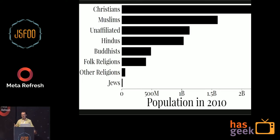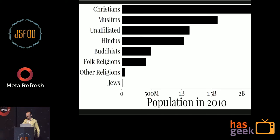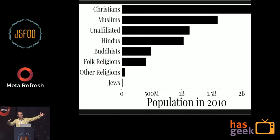This is data from the Pew Foundation about different religions in 2010 — it's an estimate. I was also kind of shocked when I saw this for the first time. I didn't realize that there were so few Jews in the world. See how small that slice is? The largest populations of religion adherents are Christians, Muslims, and unaffiliated — unaffiliated is number three. And then Hindus is number four.